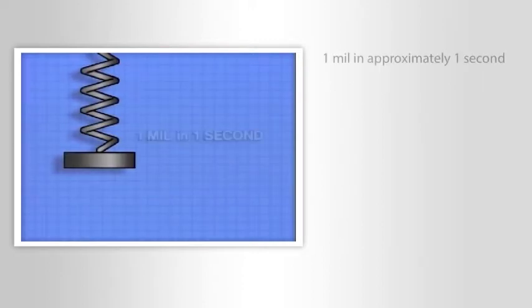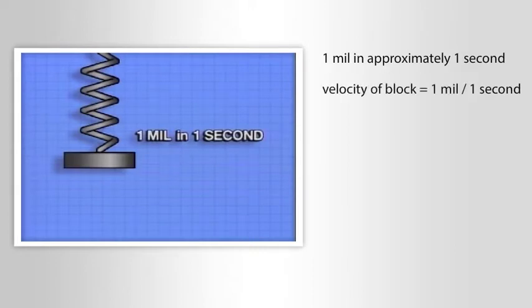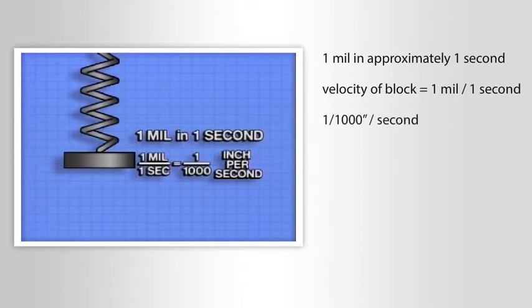If the block travels one mil in approximately one second, then the velocity of the block is one mil divided by one second, or one one-thousandth of an inch per second.